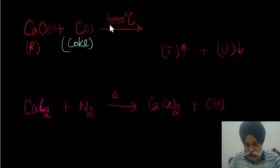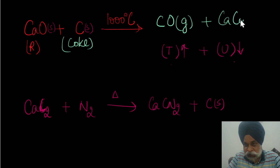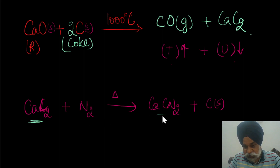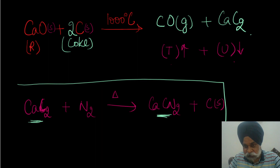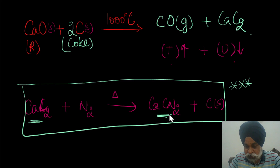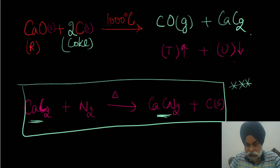Calcium oxide is then treated with coke at around 1000°C — a metallurgical process — giving carbon monoxide gas and calcium carbide (CaC₂). This requires two moles of carbon. Calcium carbide is then treated with nitrogen at high temperature to give back calcium cyanamide. This is a very important reaction to remember: CaC₂ + N₂ → calcium cyanamide.